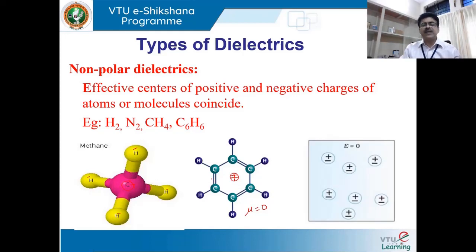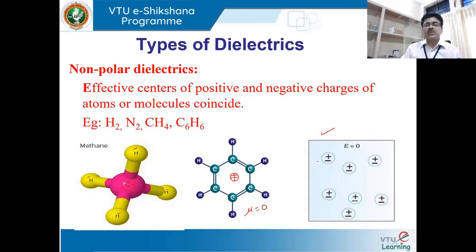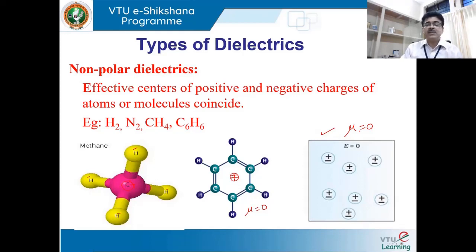If you consider a bulk material such as methane, ethane, or nitrogen, every single molecule has its effective centers overlapping, giving a net dipole moment of zero. Therefore, the net dipole moment of all molecules in a bulk is also zero, and they do not show any dipole moment in the absence of an electric field.